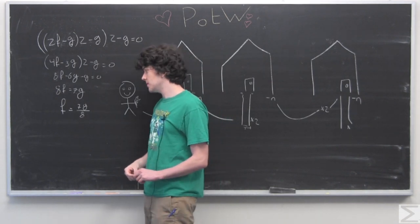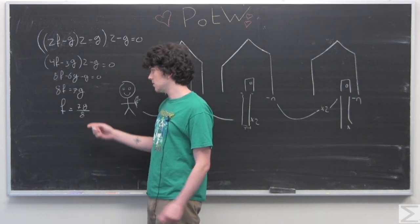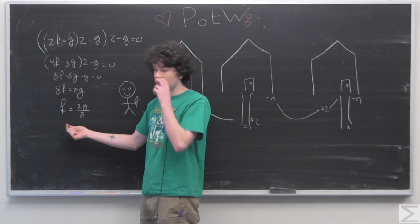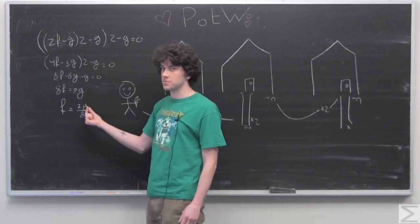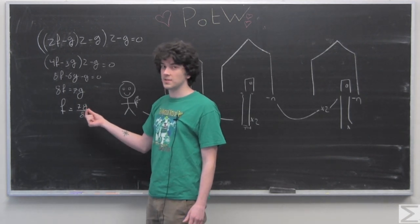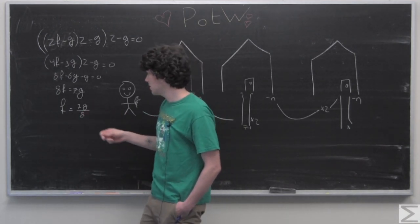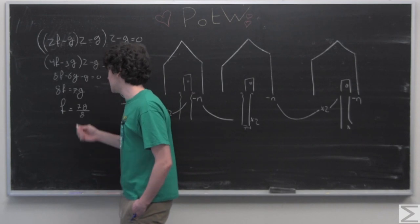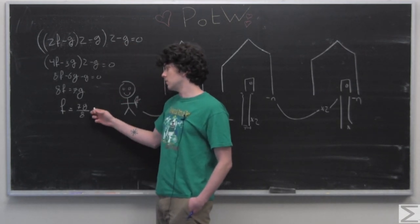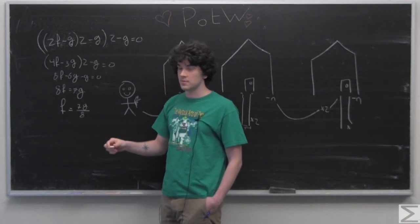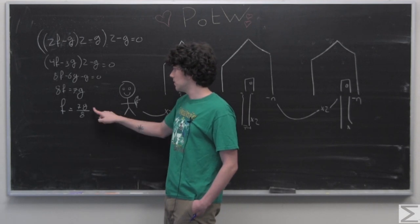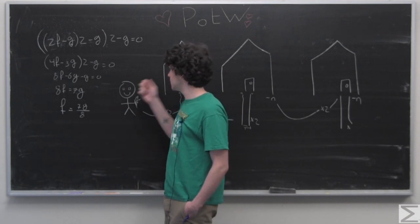So that means that in order to start with a whole number of flowers, we're going to have to give some multiple of 8 flowers to each house, and we'll start with 7 times that number divided by 8.